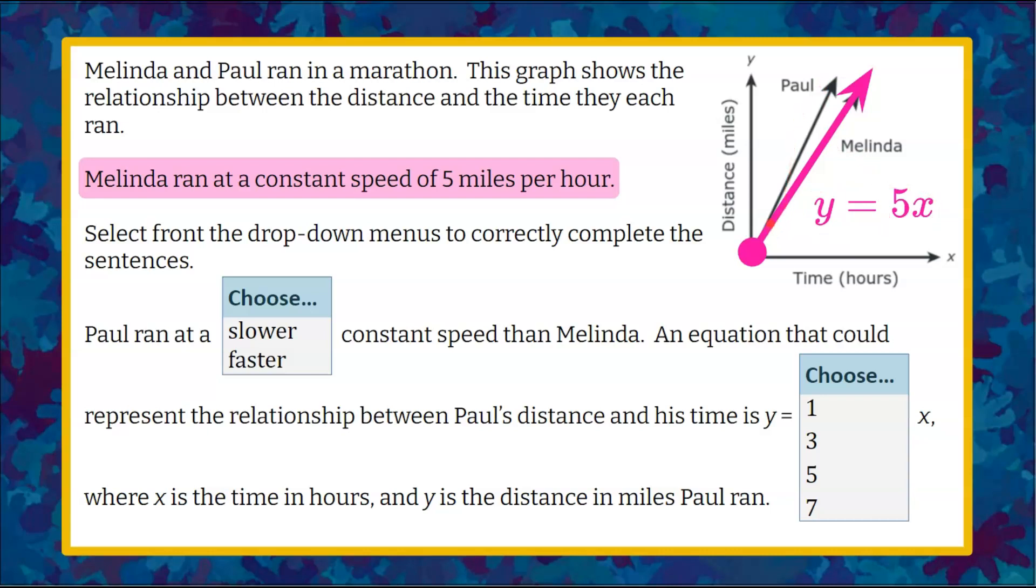And because Paul's line is steeper, right here, we know that Paul, with a steeper line, is going to have a greater constant of proportionality or slope. So we know that he is running faster than the constant speed of Melinda.